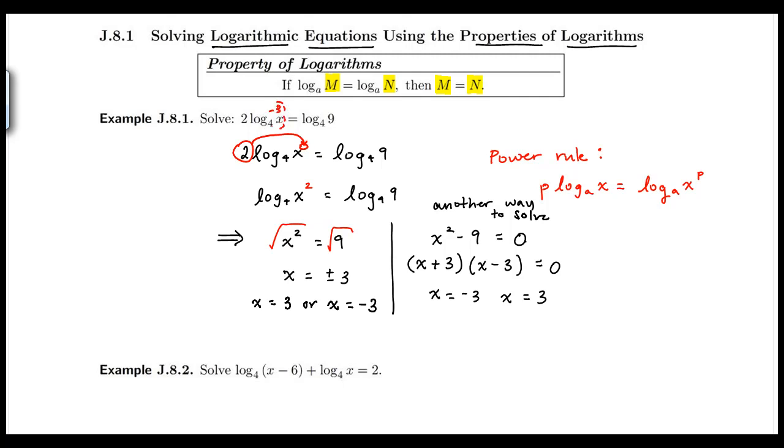this part would be negative, and it wouldn't lie in the definition of a log, so we exclude this value from the solution, and we only have one solution in which x equals 3.